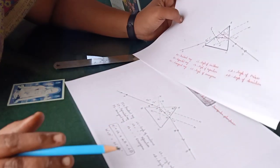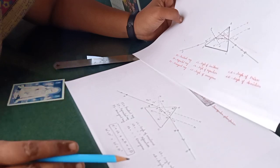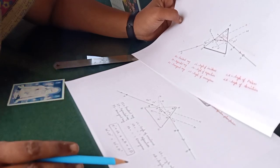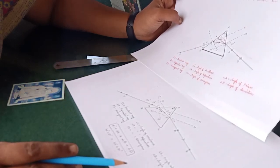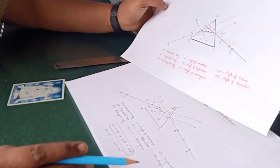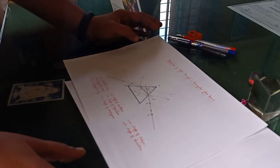This is how refraction of light takes place through a triangular glass prism.